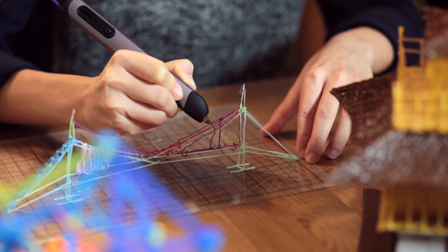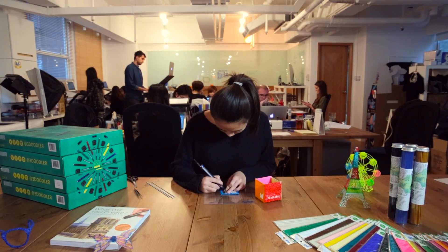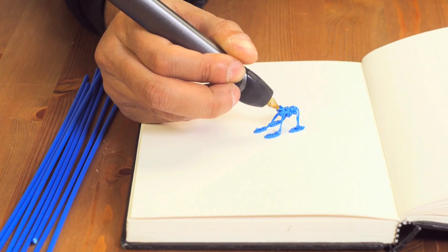The 3Doodler is the world's first 3D printing pen. To be able to draw something that you can touch in your hands without using expensive 3D printers or waiting for them to 3D print, you can actually quickly create something. You're truly free to draw whatever is in your imagination.